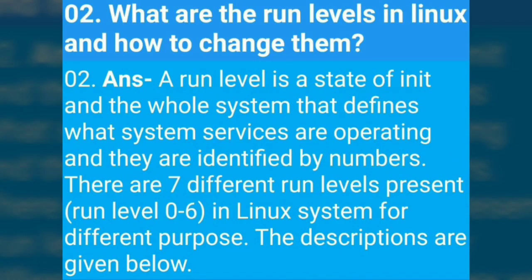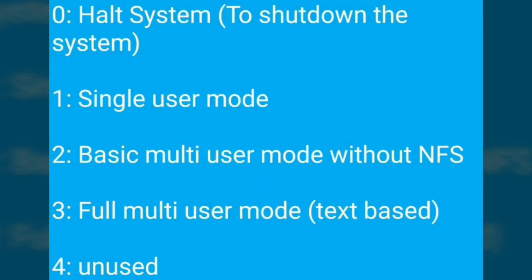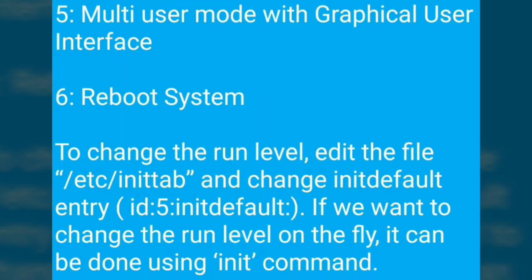What are the run levels in Linux and how to change them? A run level is a state of init and the whole system that defines what system services are operating, identified by numbers. There are 7 different run levels from 0 to 6: 0 - Halt (shut down the system), 1 - Single user mode, 2 - Basic multi-user mode without NFS, 3 - Full multi-user mode (text-based), 4 - Unused, 5 - Multi-user mode with graphical user interface, 6 - Reboot system.